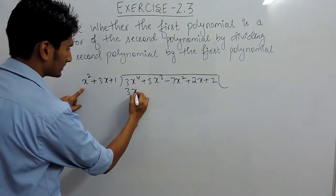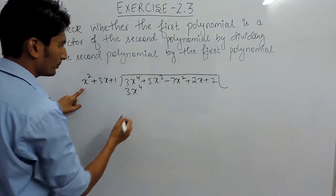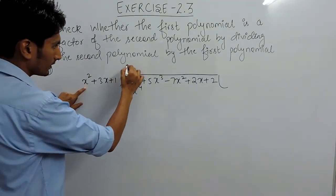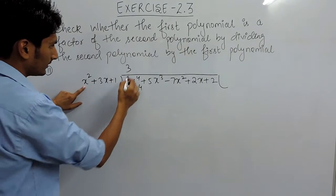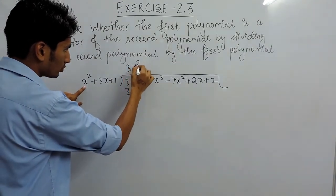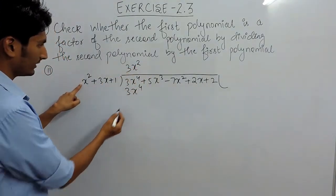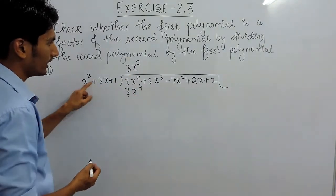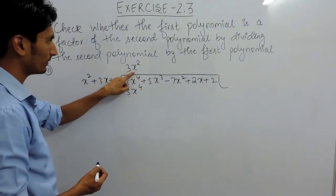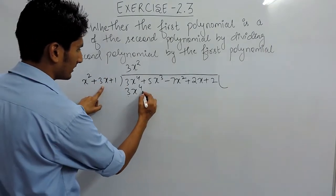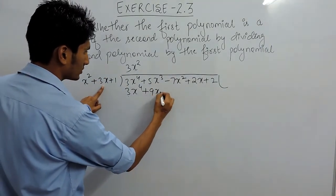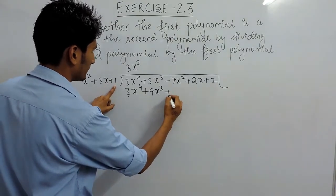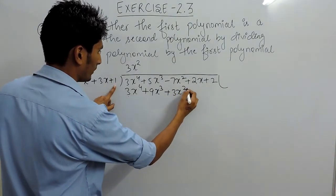You have to make it 3x raised to the power 4. For that, you have to multiply x square with 3 and x square. Because 3 multiplied by 1 is 3, and x square multiplied by x square is x raised to the power 4. After that, you have to multiply this with this. This will give 9x cube, and this one multiplied by 1 will give plus 3x square.